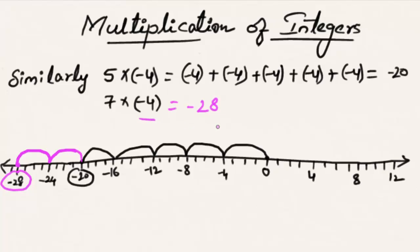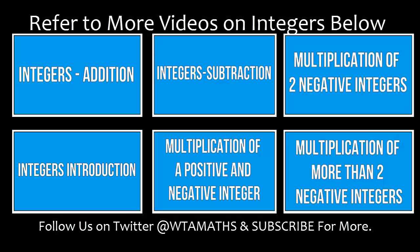Every time we multiply with a negative integer, we get the product as a negative integer. Hope you understood the concept of multiplying integers. Do like and subscribe to vteachacademy.com. Thanks for watching, and have a nice day.